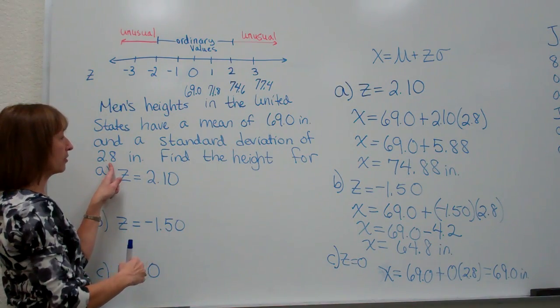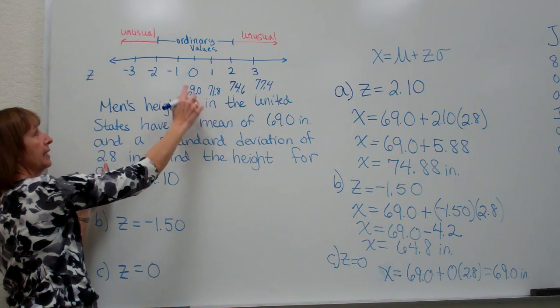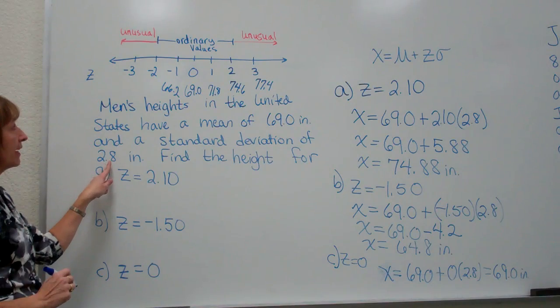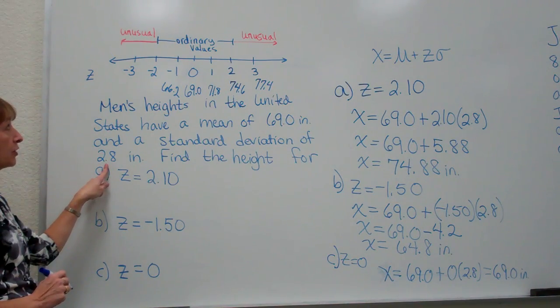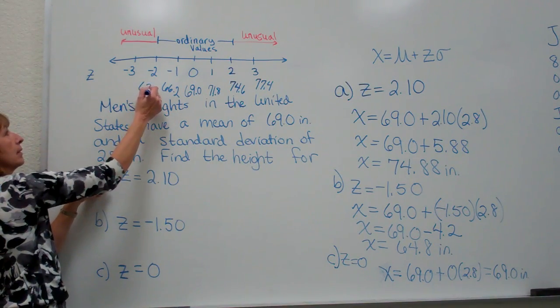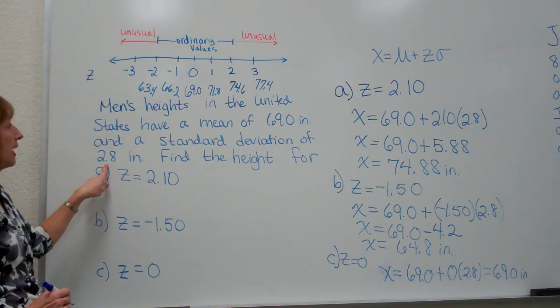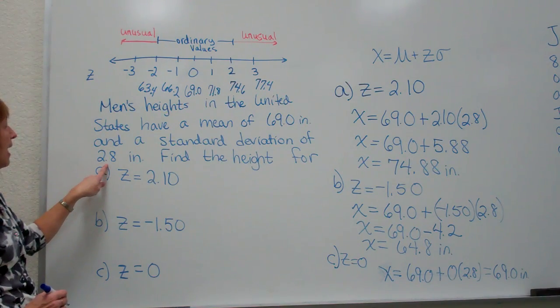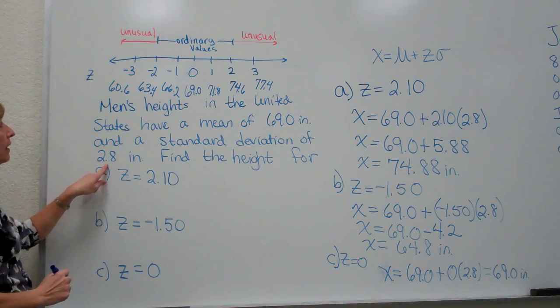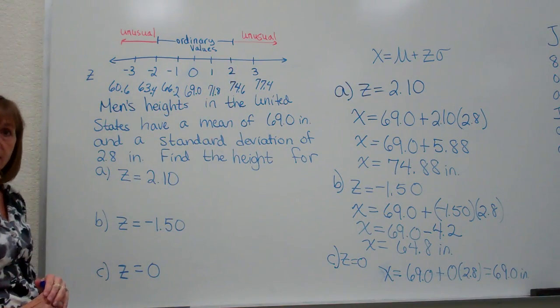Now let's go ahead and subtract our standard deviation. If I take my mean of 69 and I subtract 2.8 I get 66.2. If I take my 66.2 and subtract my 2.8 again I get 63.4. And if I take the 63.4 and subtract 2.8 again I get 60.6. So these are the raw scores that hit right on the integer values where our z-scores were.